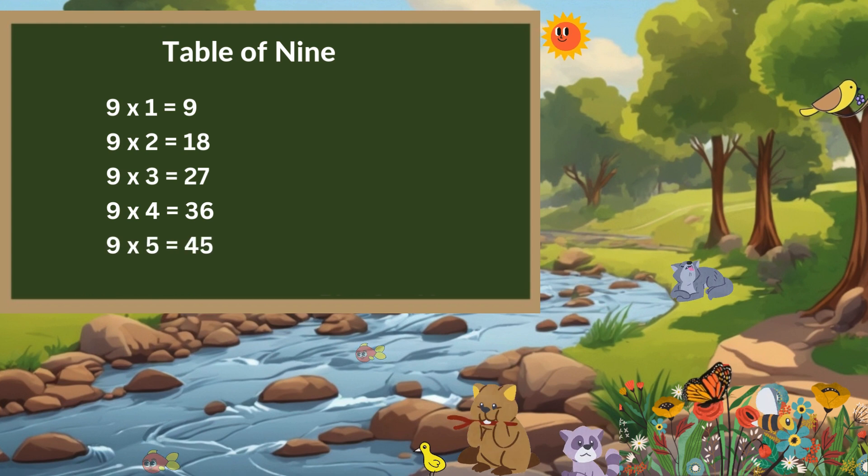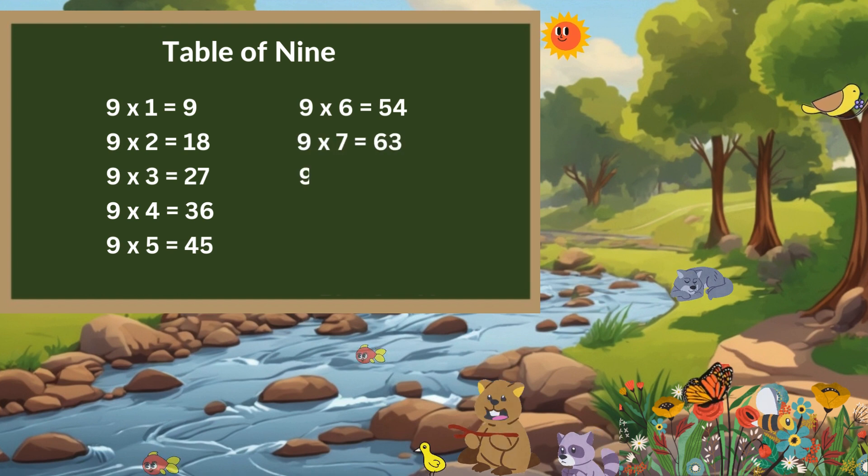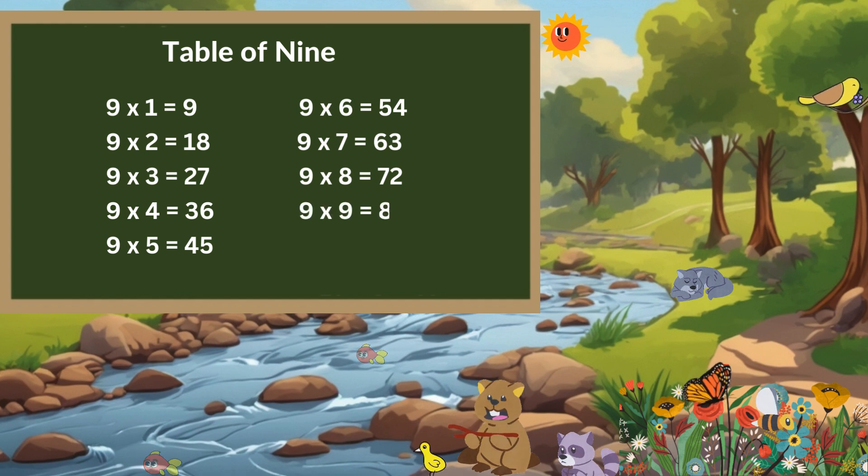9 times 5 is 45. 9 times 6 is 54. 9 times 7 is 63. 9 times 8 is 72. 9 times 9 is 81. 9 times 10 is 90.